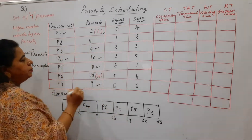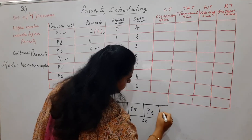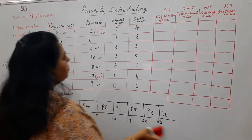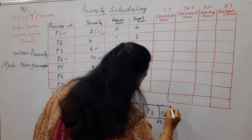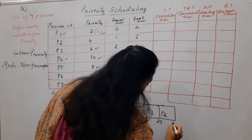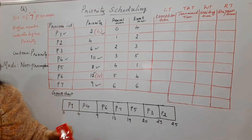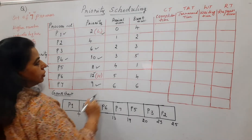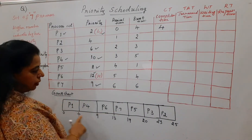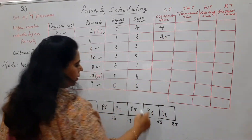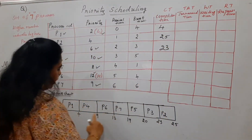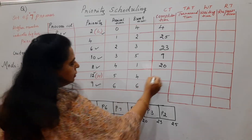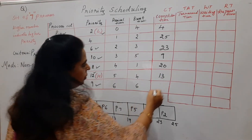Next is P3 with priority 6 and burst time 3, ending at time 23. The last process is P2 with burst time 2, ending at time 25. Completion times: P1 = 4, P2 = 25, P3 = 23, P4 = 9, P5 = 20, P6 = 13, P7 = 19.